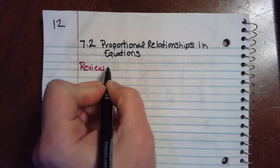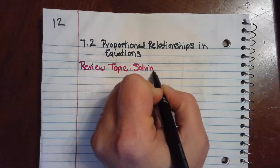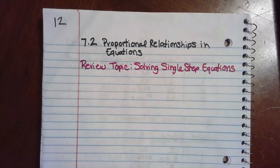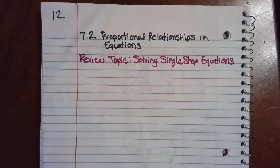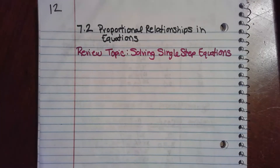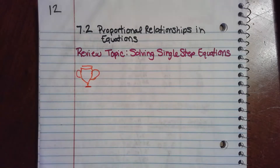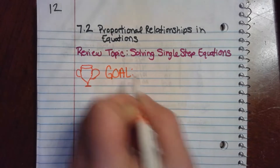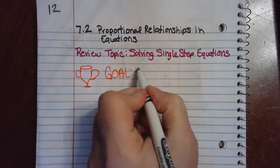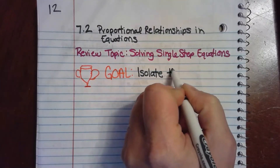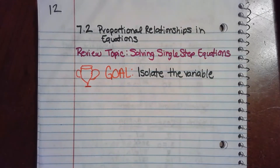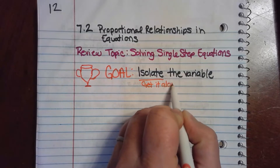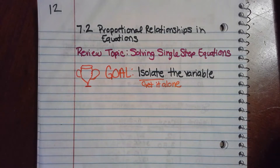Our review topic is solving single step equations. When I say a single step equation, all I'm saying is we are going to solve for a variable when it only takes one step — there's only one operation happening. So let's take a look at what our goal is. Our goal for solving a single step equation is to isolate the variable. If you've ever heard of isolation, you know that isolate means to get it alone.